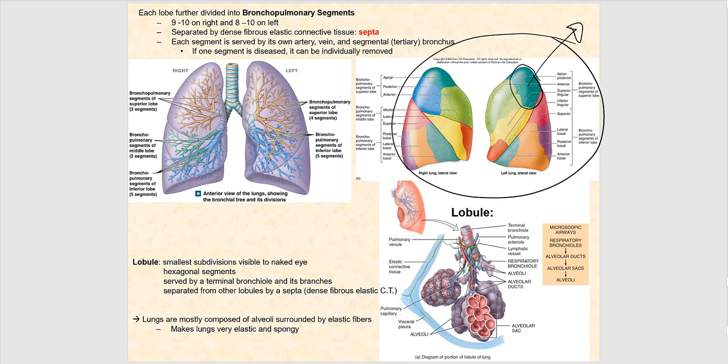Each bronchopulmonary segment has its own blood supply. The segmental artery provides blood flow to the bronchopulmonary segment, and the segmental vein drains it. So segmental artery and segmental vein refer to the blood supply to a bronchopulmonary segment.